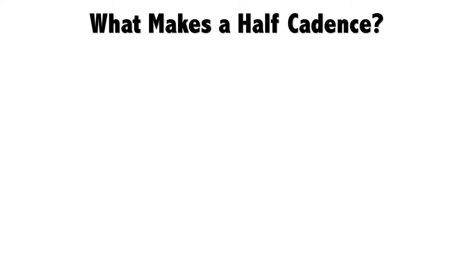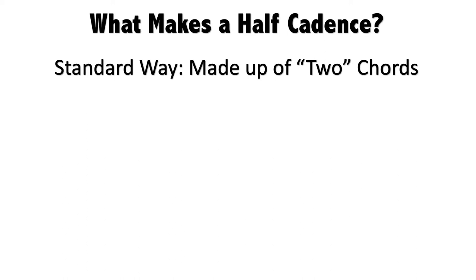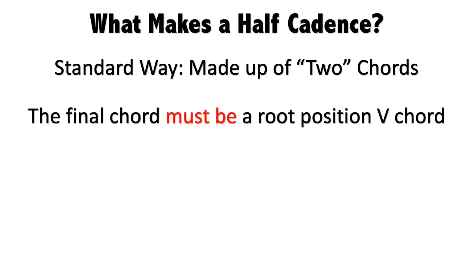Just like all cadences, there's a standard way. It's made up of two harmonies. I always emphasize that two chords or two harmonies does not mean the actual number of chords is two. I can have one harmony repeated many times, but it's still one harmony. For a half cadence, the only simple rule is that the final chord must be a root position V chord. Surprisingly, that's the only definition of a half cadence.